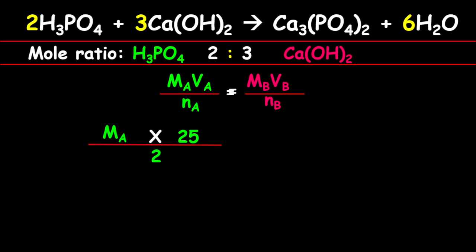And so that equals the molarity of the base, which was given as 0.31, multiplied by the volume of the base, which is 8, divided by 3 because we have three moles of Ca(OH)₂ based on the balanced chemical equation.